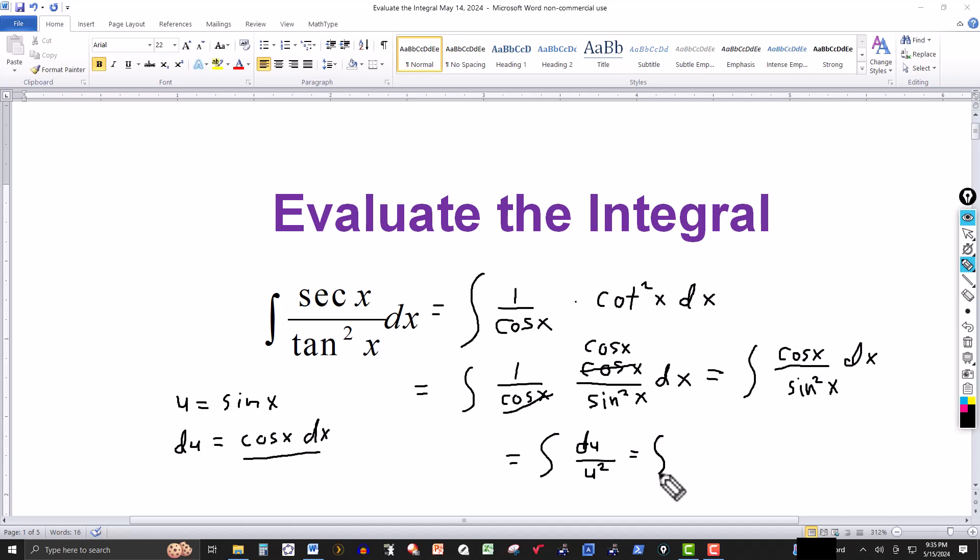Now it's just basic integration. I can write the 1 over u squared as u to the negative 2, because of negative exponents, this would be du. And now I just integrate.